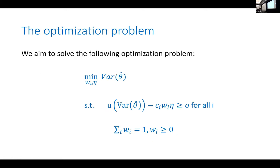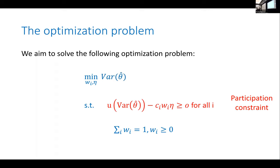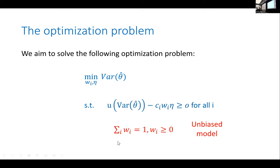As the platform, I aim to produce the best possible model — to minimize the variance of my estimator and maximize accuracy. But I need to ensure agents will participate and share their data. So I must ensure that for each agent, I'm giving them a better trade-off between benefit and privacy than they'd get by not joining. The final constraint is that for an unbiased model, the weights must sum to one and be positive.